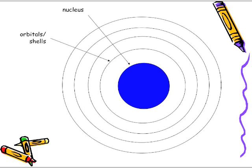We do not need to draw four of them as we have drawn here. We only draw according to how many we are looking at. So this example has 11 positives in the nucleus — these represent the protons. In this example, there are 11 protons and we have 12 neutrons.